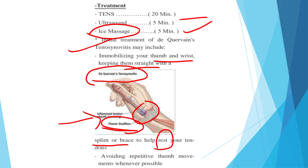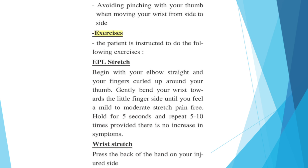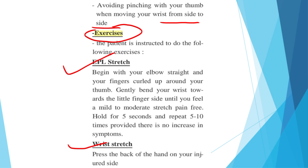Use a splint or brace to help rest the tendon so that inflammation does not increase. Avoid repetitive thumb movements whenever possible. Immobilize the thumb in a neutral position and avoid pinching with the thumb when moving the wrist from side to side. Exercises for this condition include the extensor pollicis longus stretch and the wrist stretch.